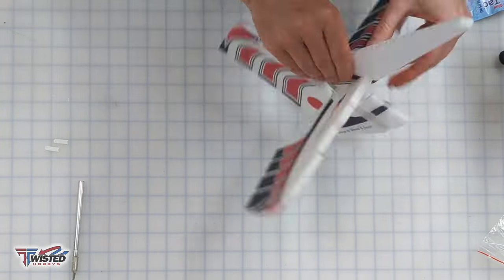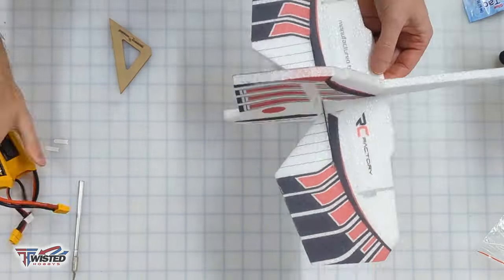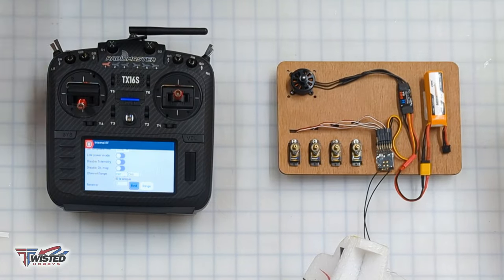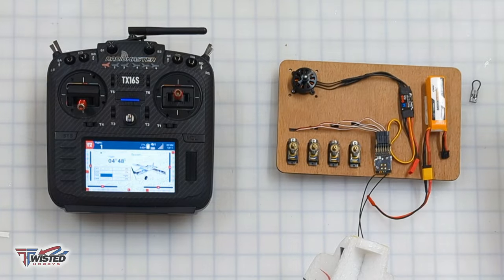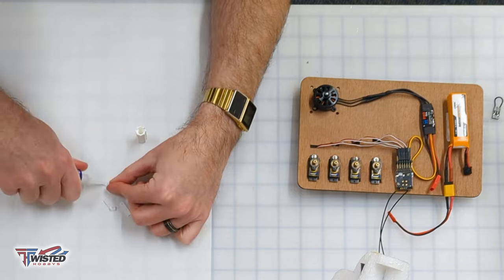Then we attach the elevator and rudder assembly together and then the next thing I'm going to do is bind my receiver, calibrate my ESC, make sure the motor is going the right direction and also center my servos. There's a link to a video on how I do all of this in the description.